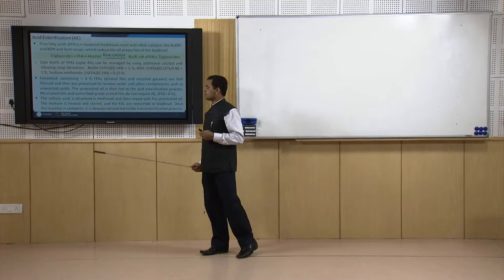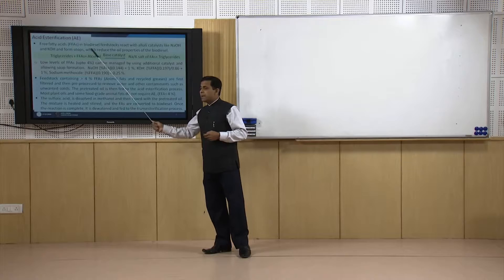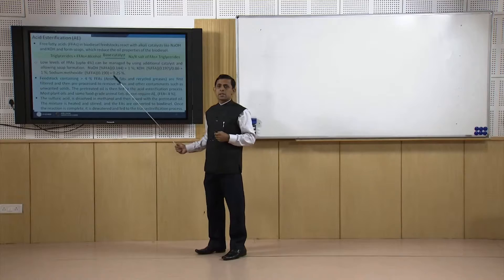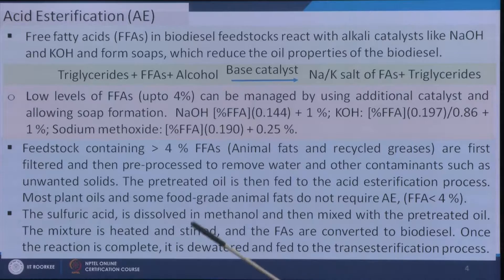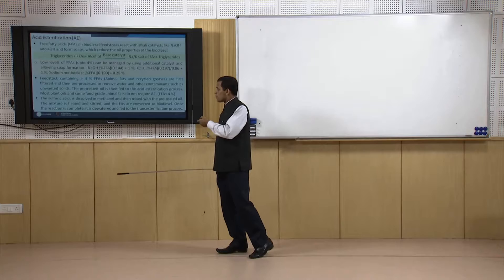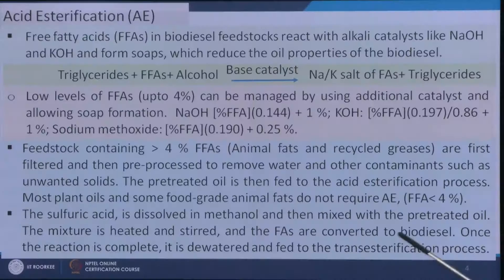But if the free fatty acid content is relatively higher — more than 4 percent — then we need to separate the free acids first before the transesterification reaction starts. In that case, acid esterification is important. To remove these free fatty acids, sulfuric acid is added. The sulfuric acid reacts with the free fatty acids and converts them to esters, which is desirable for biodiesel. Sulfuric acid is dissolved in methanol, then mixed with the preheated oil; the mixture is heated and stirred, and the free fatty acids are converted to biodiesel. That is the main role of acid esterification.